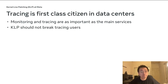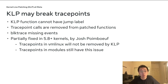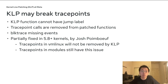However, there were issues. First, KLP may break trace points, because KLP functions cannot have jump labels and trace points use jump labels. As a result, if there's a trace point call in a function that is patched, the trace point call is removed. This hit us as a block trace missing start events. This is partially fixed in 5.8 and newer kernels — trace points in vmlinux will not be removed by KLP, however trace points in kernel modules still have this issue.